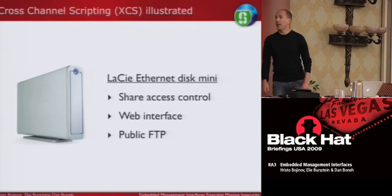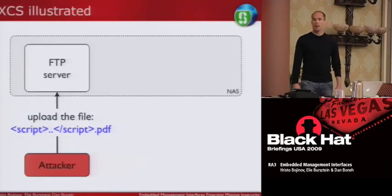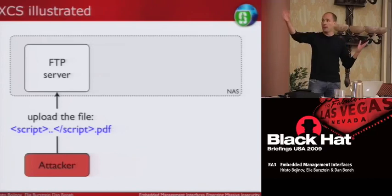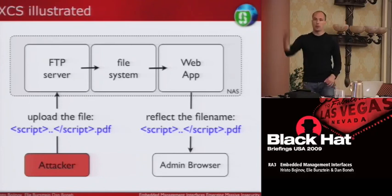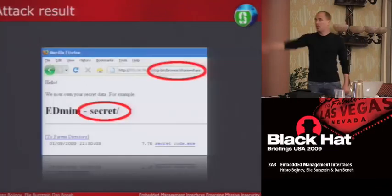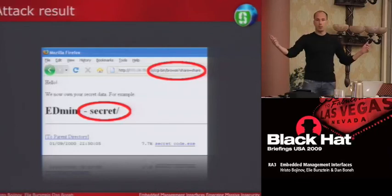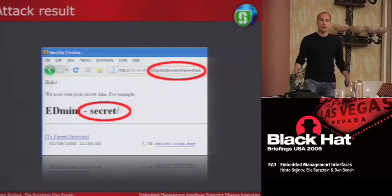Back to XCS — cross-channel scripting — on a LaCie Ethernet NAS device. The idea is instead of going through web injection, we go through FTP. You create a file with a script as its name. By itself, FTP doesn't care about HTML tags, so the FTP server is completely secure — no buffer overflow, nothing. It stores the file because it has no reason not to. The problem is when the administrator goes to the device to administer it, the filename is reflected to the browser, and the browser does care about HTML tags. Once again the browser executes the script. As a result, you can bypass authentication: if you have two shares — one public, one not — you inject the file in the public share with a specially crafted name and you can leak out protected files.